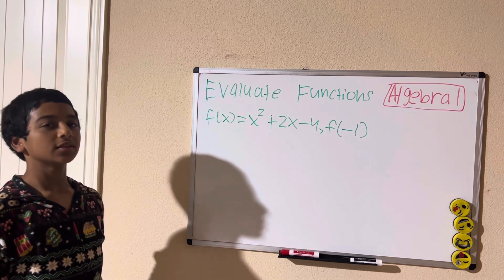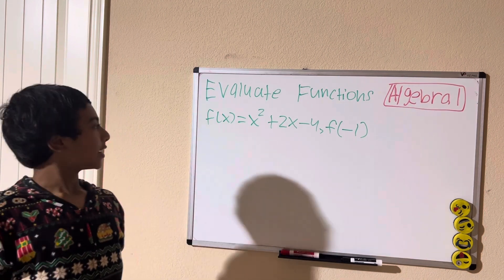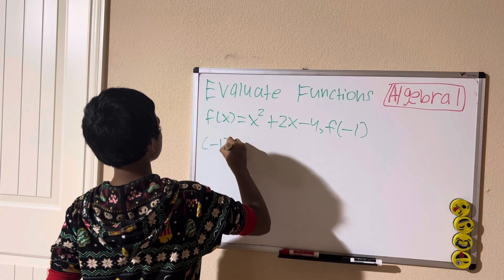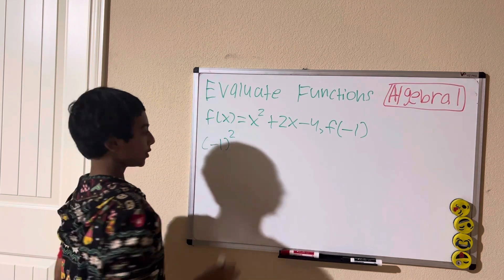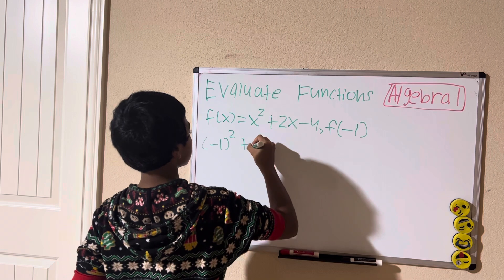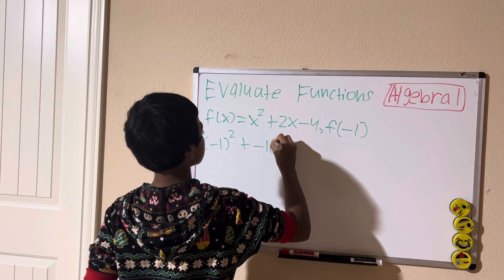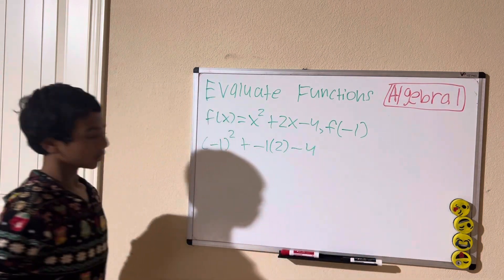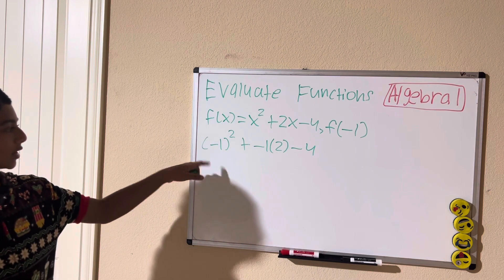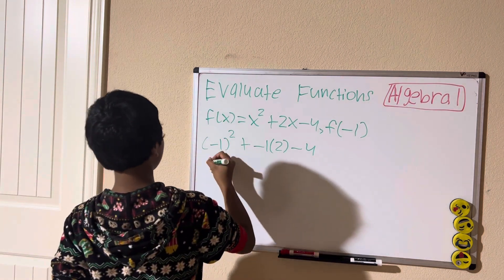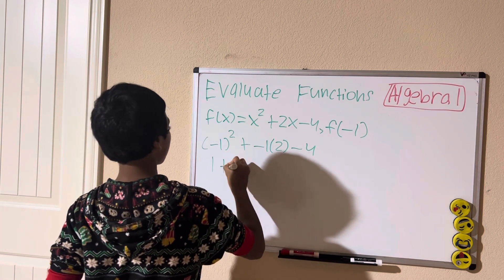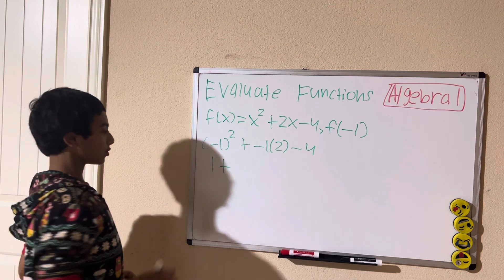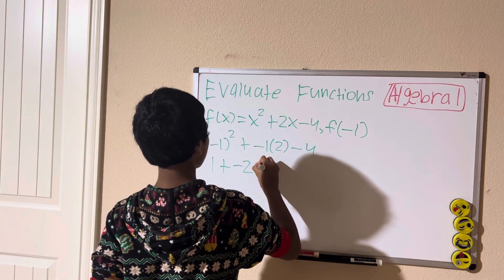We're just plugging x for negative 1, so we're going to have negative 1 squared plus negative 1 times 2 minus 4. Negative 1 squared is positive 1, so we're going to have 1 plus 2 times negative 1 is negative 2. 1 plus negative 2 minus 4.